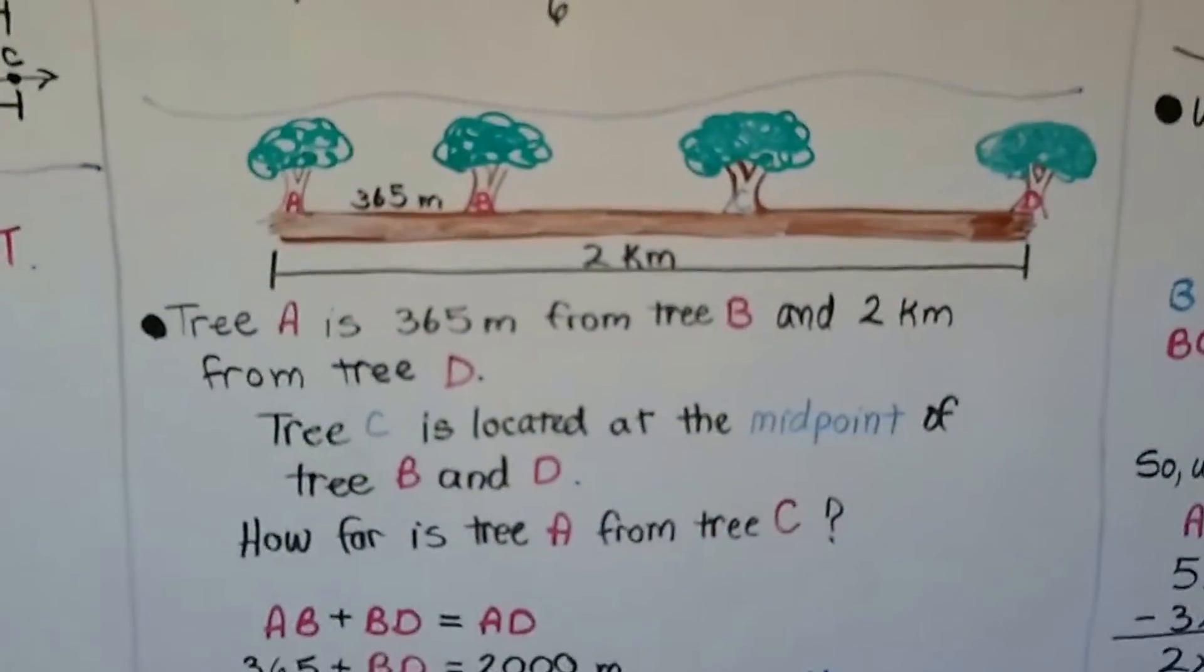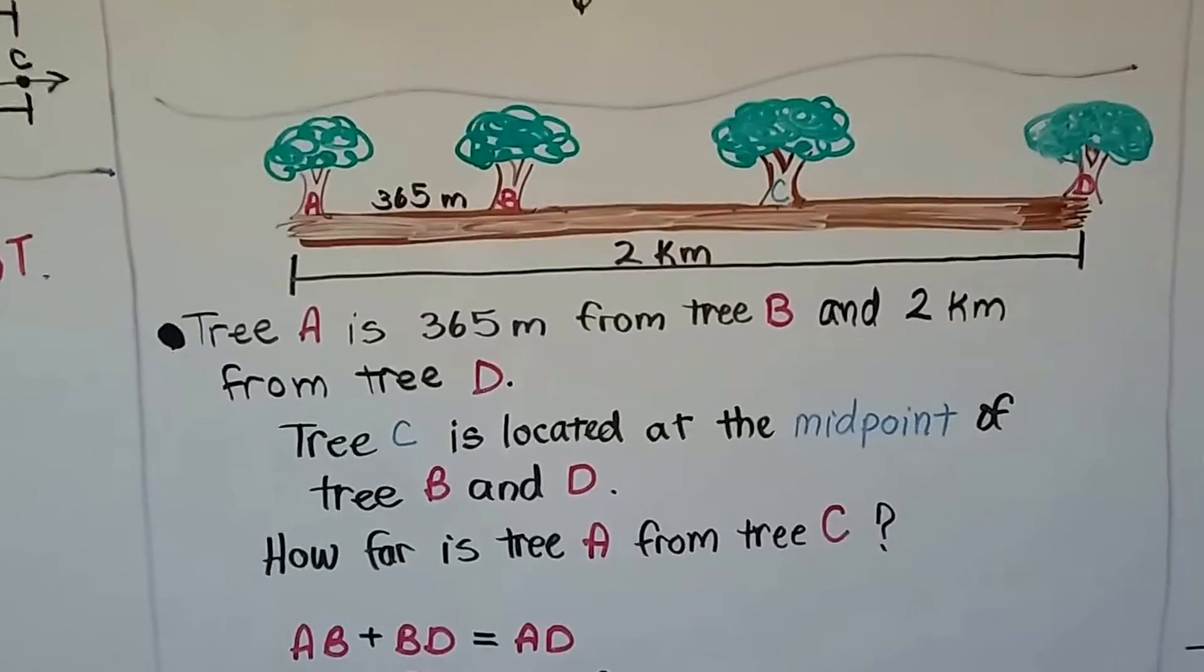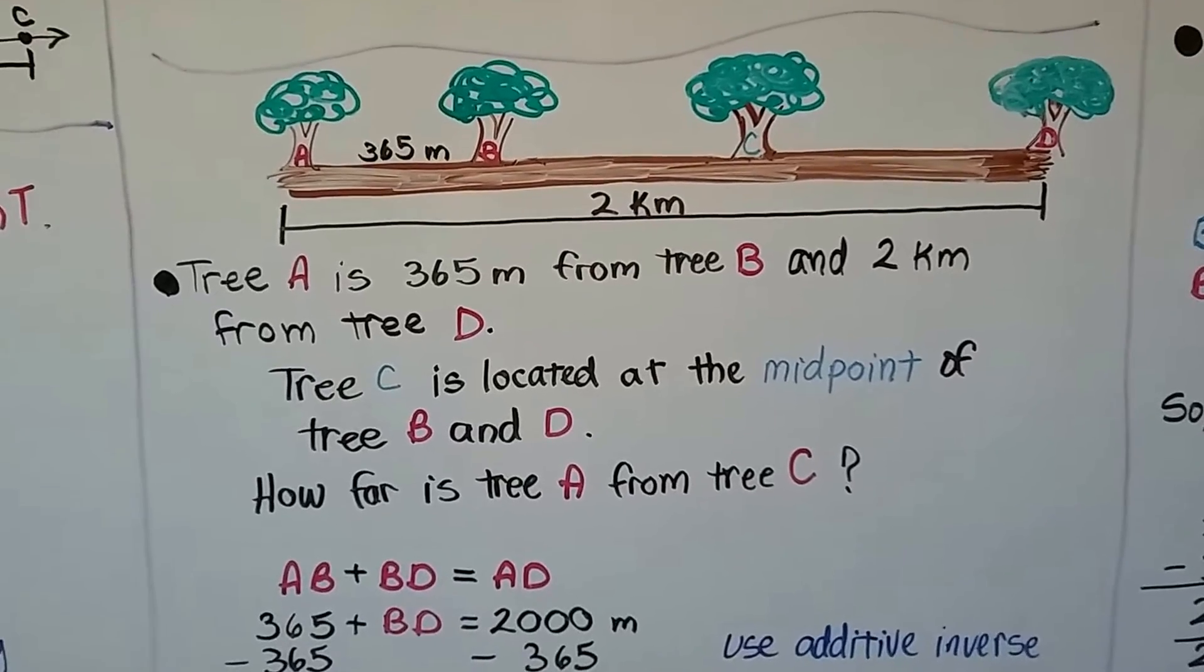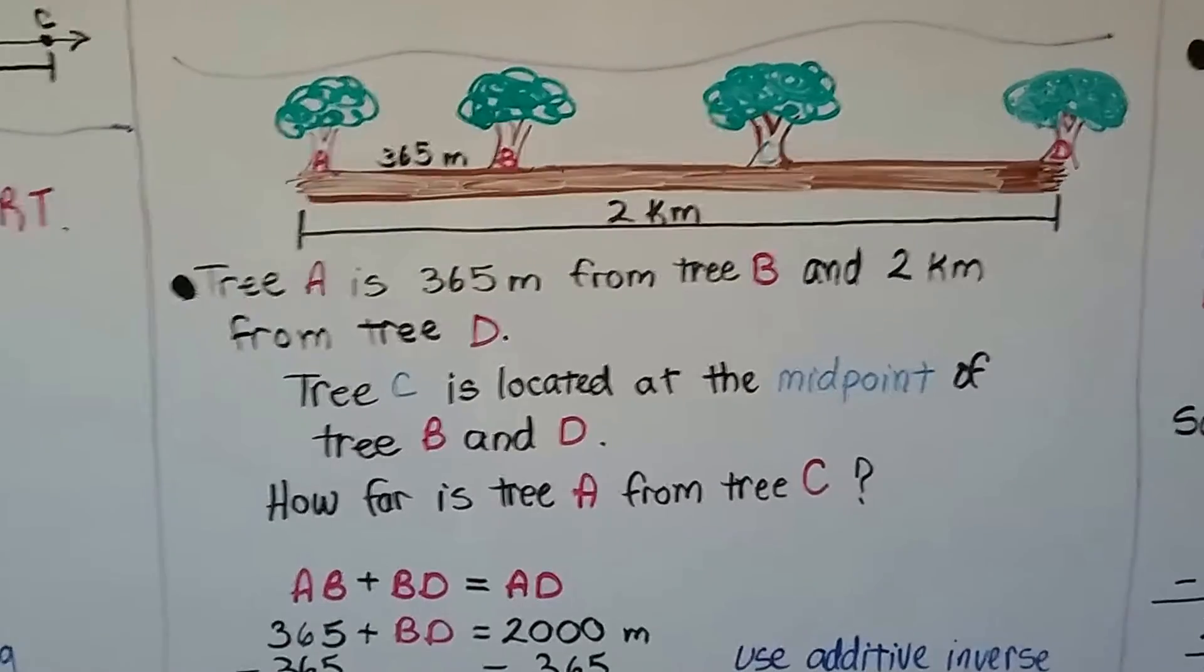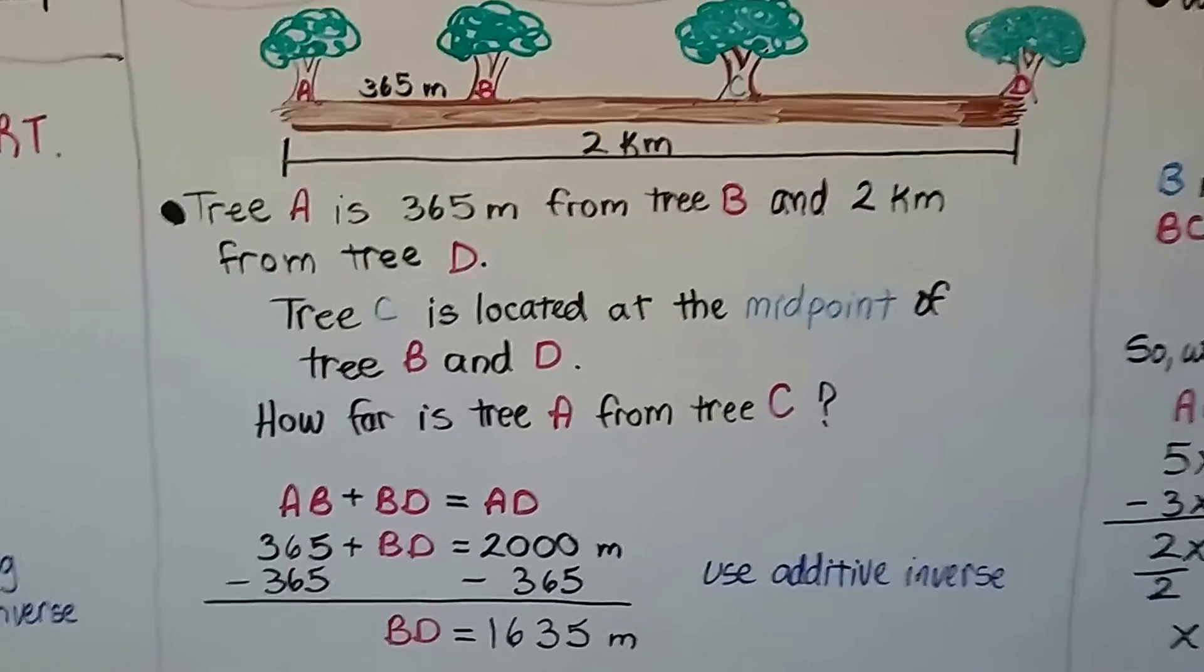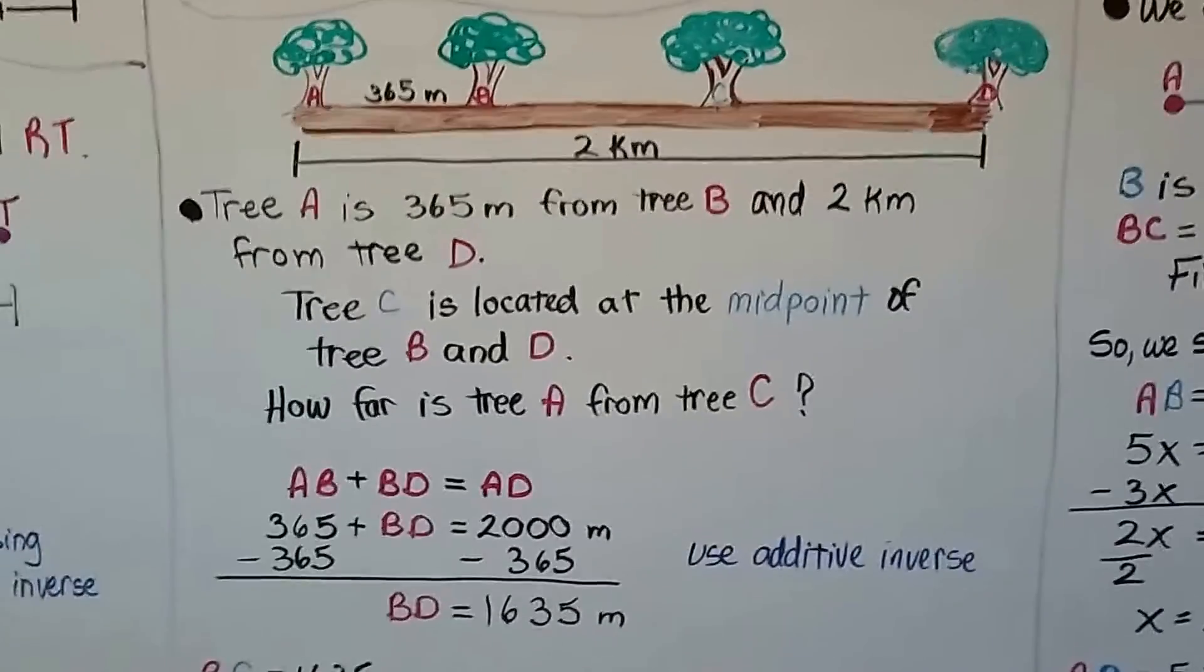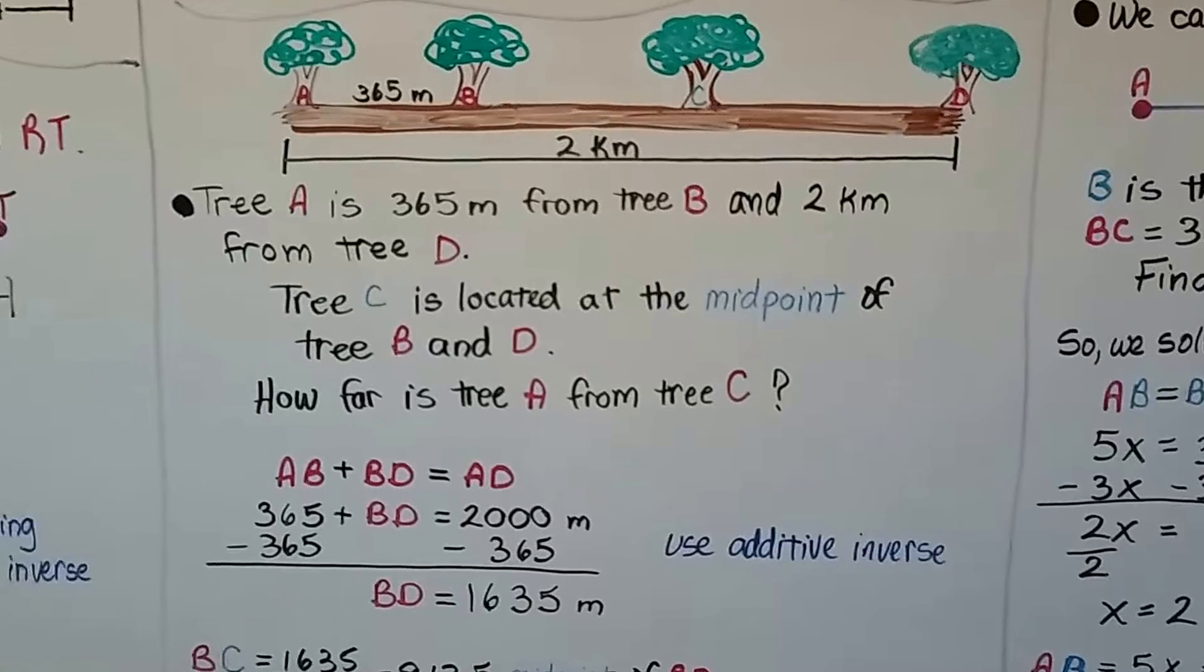Here we've got four trees. We've got tree A, B, C, and D. Tree A is 365 meters from tree B, and it's 2 kilometers from tree D. Tree C is located at the midpoint of B and D. So this third tree is dead center between the B and the D. How far is tree A from tree C? What we do is we do AB plus BD equals AD, and if we know it's 365 meters between A and B, we can do 365 plus the BD equals the 2,000 meters, because that's 2 kilometers, isn't it? 2,000 meters.